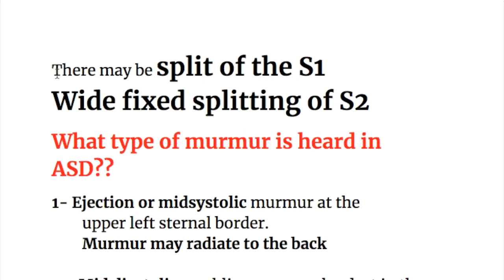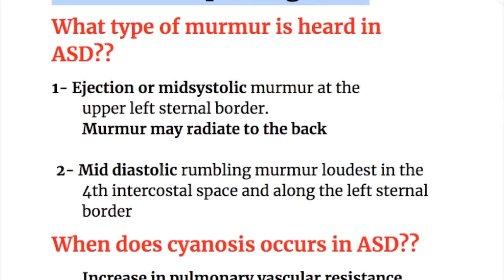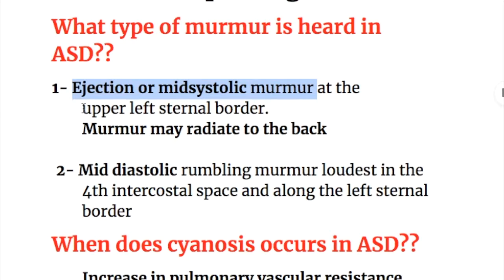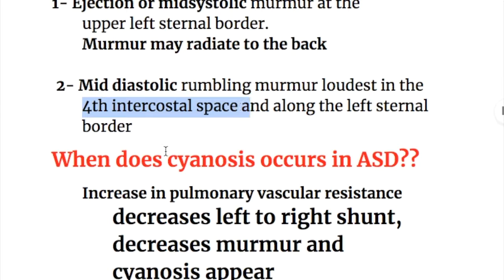Regarding heart sounds, there may be splitting of the first heart sound and there is wide fixed splitting of the second heart sound. Two types of murmur are heard: an ejection or mid-systolic murmur at the left upper sternal border, and a mid-diastolic rumbling murmur loudest in the fourth intercostal space along the lower left sternal border.